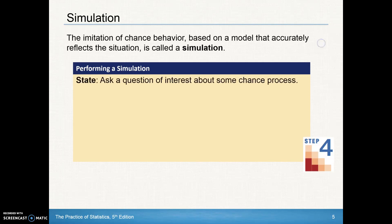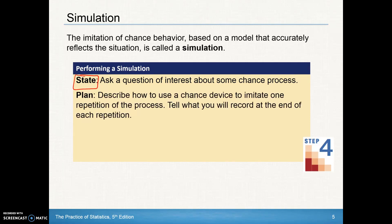What are some of the important points about performing a simulation? Number one, we must look at stating the situation — we're going to ask a question of interest about some chance process. Then we're going to plan. In other words, describe how we're going to use a chance device like a die, a coin, a calculator, or table D, to imitate one repetition of the process and then tell what you record at the end of each repetition.